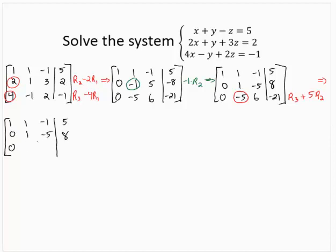Negative 5 add 5 times 1 is 0. 6 add 5 times negative 5, that's 6 add negative 25, that's negative 19. Negative 21 add 5 times 8, negative 21 add 40 is positive 19.